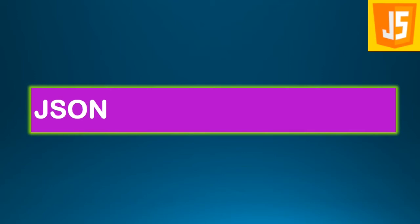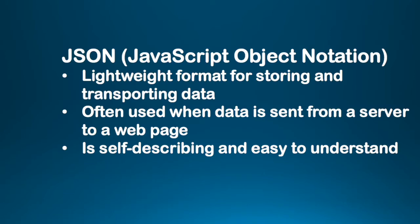JSON is an extremely important concept in JavaScript and it's something that's heavily used. JSON stands for JavaScript Object Notation. It's a lightweight format for storing and transporting data, often used when data is sent from a server to a web page. Typically when you go to a browser and are checking your Gmail or Facebook, most of the data is being transported using JSON. Its popularity is because it's self-describing, easy to understand, and easy to read.